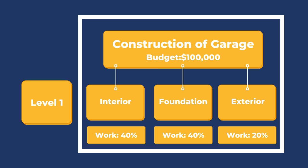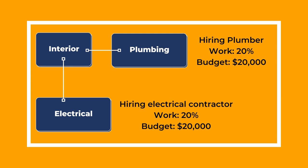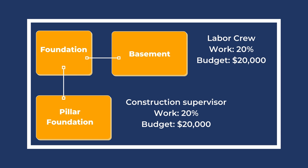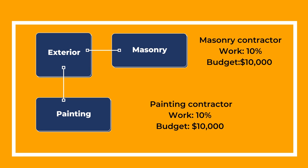Interior is further divided into two tasks: plumbing and electrical works, each with a 20% work share. The project manager will hire a plumber and electrical contractor, with a budget of $20,000 each. Foundation is divided into basement and pillar foundation, requiring a labor crew and construction supervisor respectively, with a budget of $20,000 each. Exterior work includes masonry work and painting, each with a 10% work share, requiring a masonry contractor and a painting contractor respectively, with a budget of $10,000 each. All these phases and tasks are collectively known as a leg in WBS.